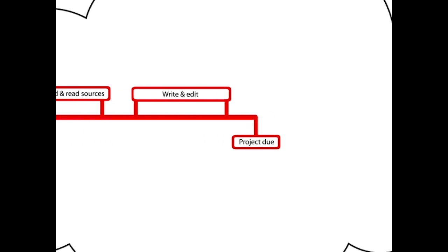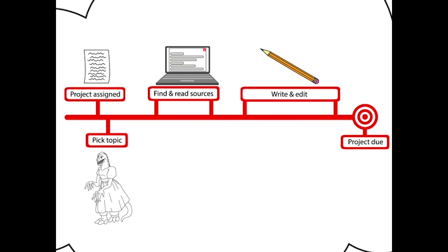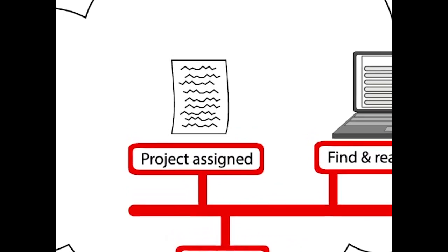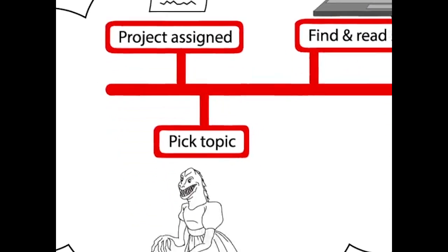Jenny's problems started with her mental model of the research process, which she sees as a one-way street. Like many students, Jenny thinks that once a project is assigned, she should pick her topic right away.